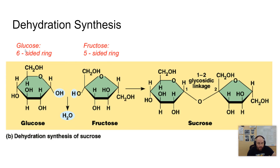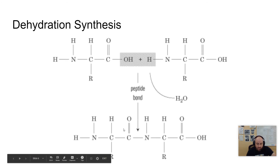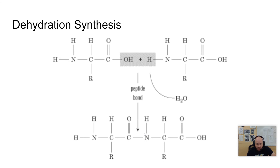If you look closely at glucose and fructose, they have the same chemical formula but are shaped completely differently. Fructose is a five-sided ring and glucose is a six-sided ring, showing how you can get infinite different combinations and therefore many different molecular properties. Here's another example of dehydration synthesis between two amino acids. The OH from the carboxyl end of one amino acid combines with the H from the amino end of the other, water is removed, and they join together to form a peptide bond. A protein can be several hundred amino acids in length.